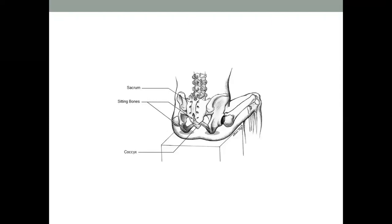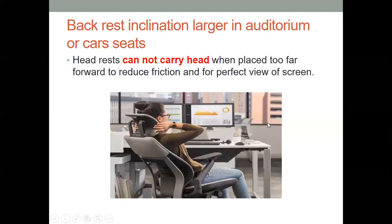We have many treatment options for coccydynia: we can mobilize the coccyx, mobilize the SI joint, stretch the piriformis muscle, and use electrotherapy modalities. We guide patients to use a soft surface, change and modify posture, and use a coccyx pillow which reduces pressure on the coccyx. We focus on primary prevention and secondary prevention.